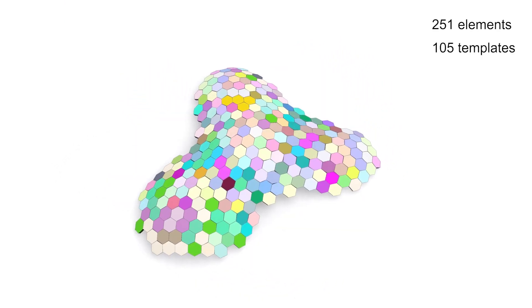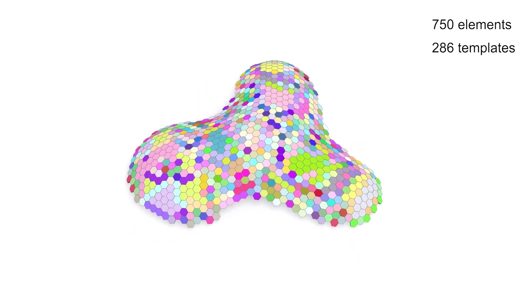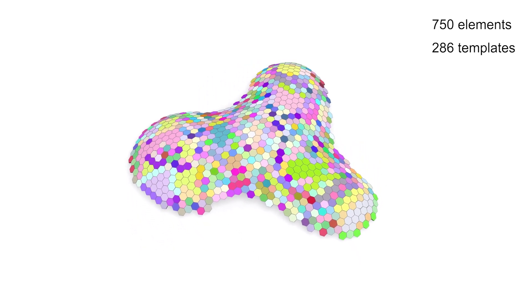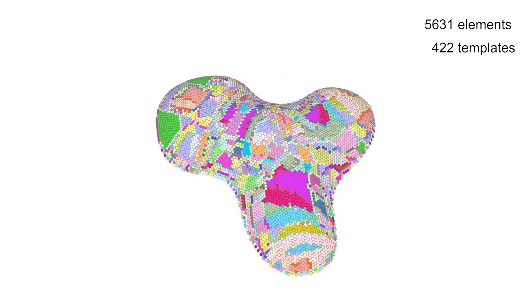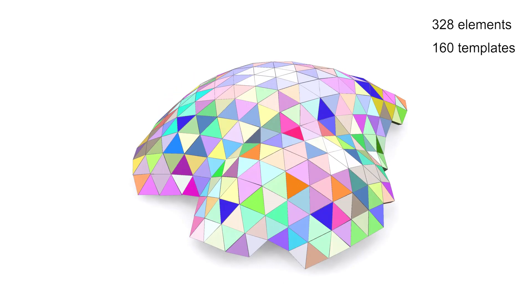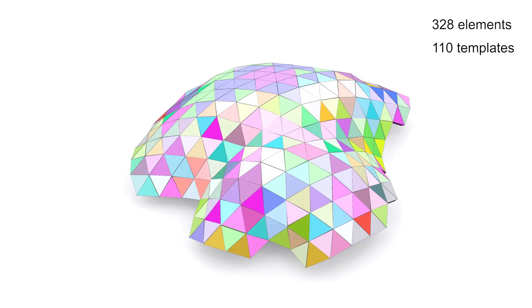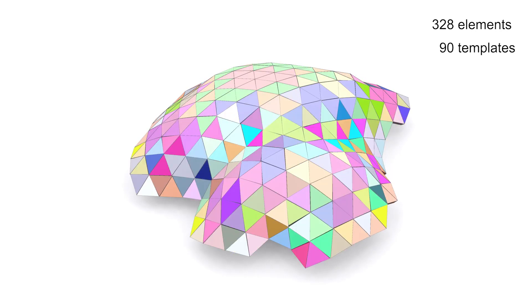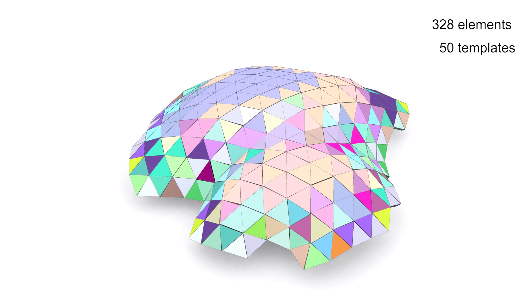Our approach is scalable and is able to model shell structures with thousands of elements. Our experiment shows that there are more and more gaps and overlaps in a shell structure when the number of template elements is reduced.